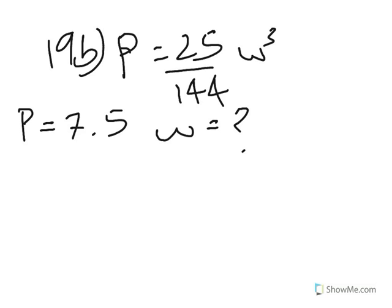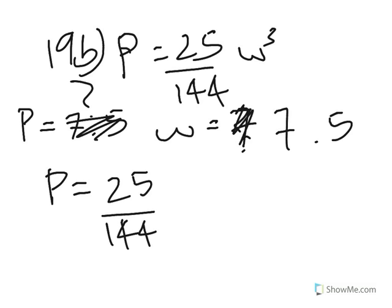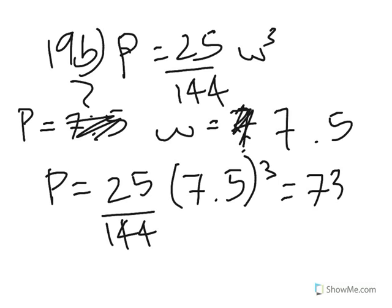19B is asking: calculate the value of P when W is 7.5. All we do is substitute this W value into the original equation. So we get P equals 25 over 144 times 7.5 cubed. We get an answer of P equals 73.2, correct to three significant figures. Just use your calculator — it's very simple.